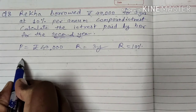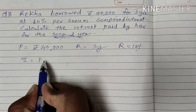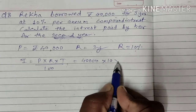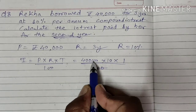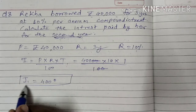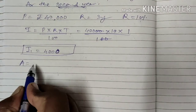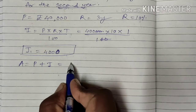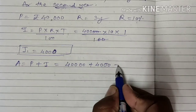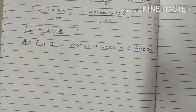We have to calculate the compound interest separately for the 2nd year, so the formula method is not useful here. We will use the simple interest method. Using the formula I = PRT upon 100: 40,000 multiplied by 10 multiplied by 1 upon 100. Zeros get cancelled, so the interest for year 1 will be Rs. 4,000. Then Amount = Principal + Interest: 40,000 plus 4,000 = Rs. 44,000.